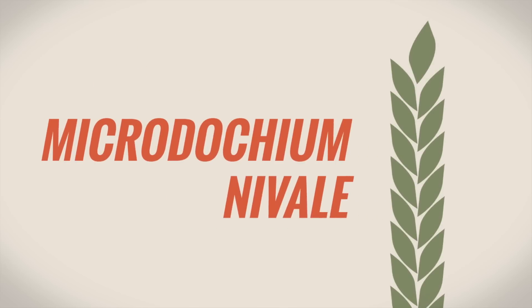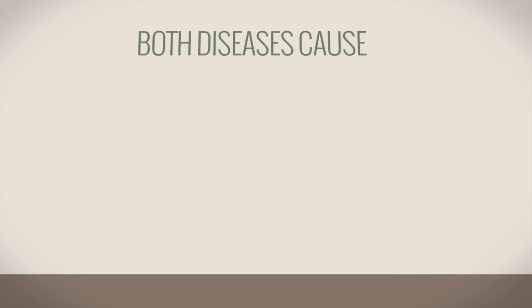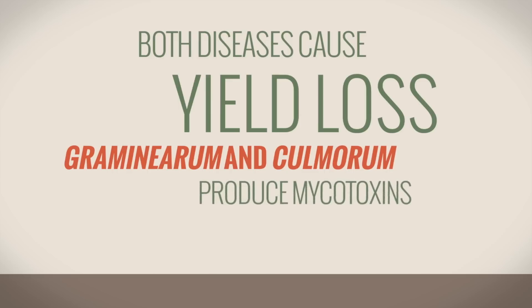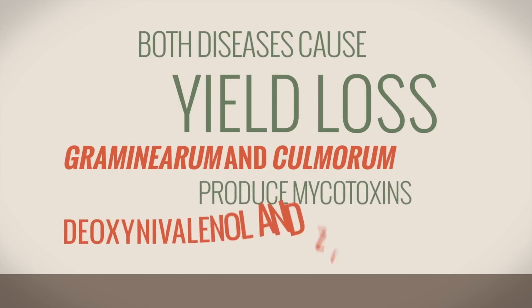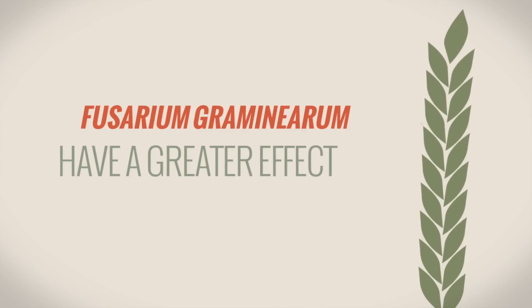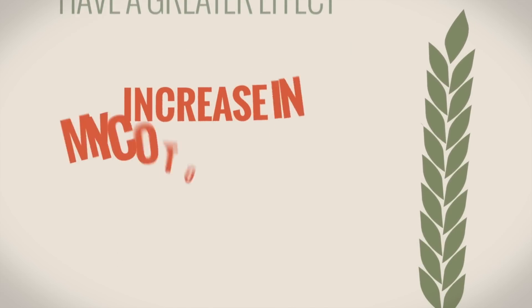Whereas Microdocium nivale will affect individual spikelets, affecting germination of the seed itself. Importantly, while infection from both diseases can result in similar yield losses, only the Fusarium species Graminearum and Culmorum produce the harmful mycotoxins, with Fusarium Graminearum having the greatest effect on grain quality and an increase in mycotoxin levels.